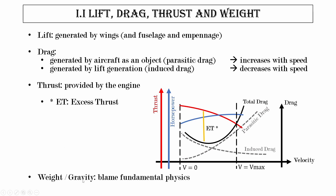Thrust is provided by the engine and is used to propel us forward. Weight is caused by gravity, and this is the reason why we need lift to stay airborne. Looking at the thrust-horsepower diagram for a propeller-driven aircraft: a propeller engine decreases in efficiency and capability to provide thrust with increasing speed. The faster we fly, the less thrust our engine puts out. In terms of horsepower, output slightly increases then decreases with speed, but can generally be assumed as more or less constant.